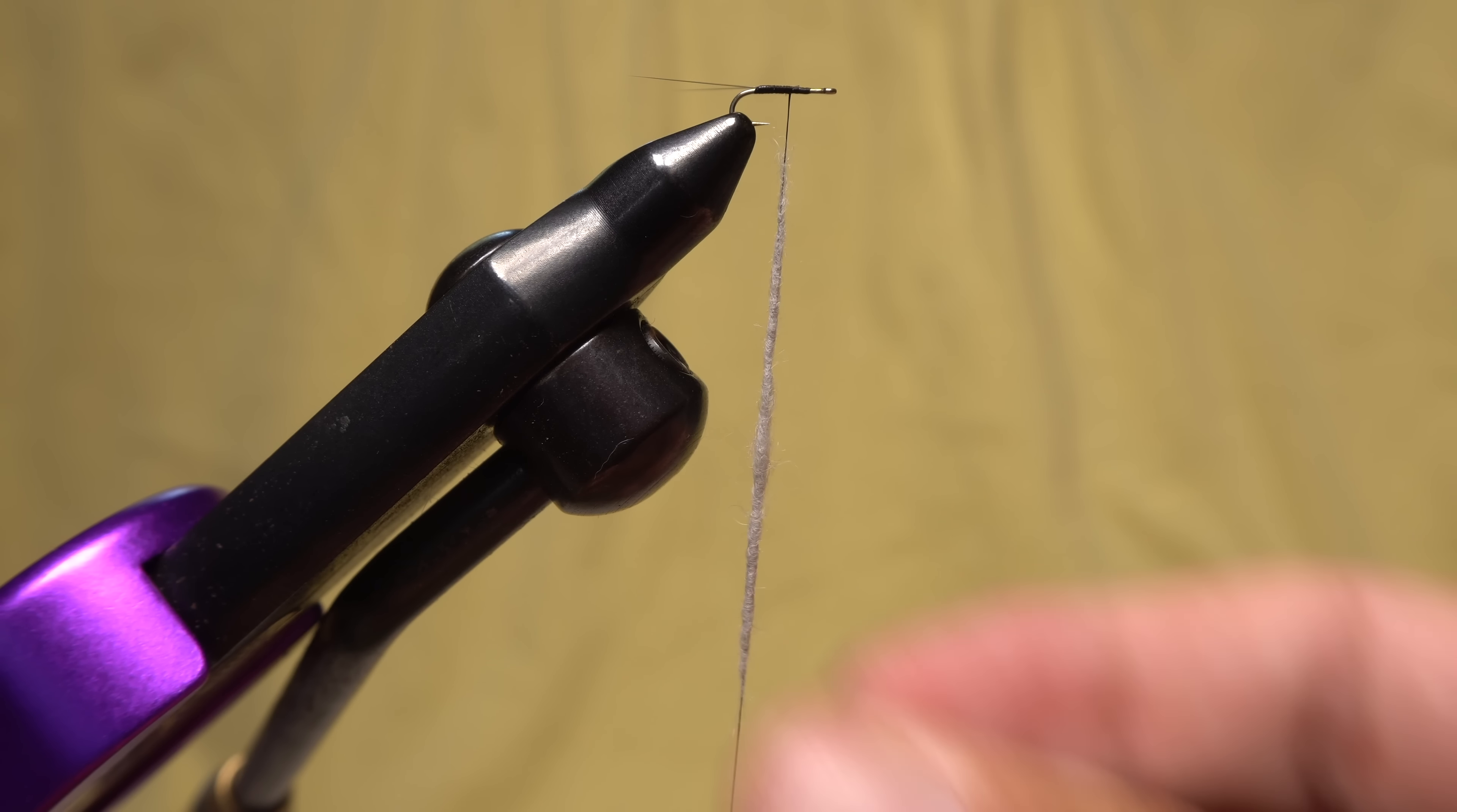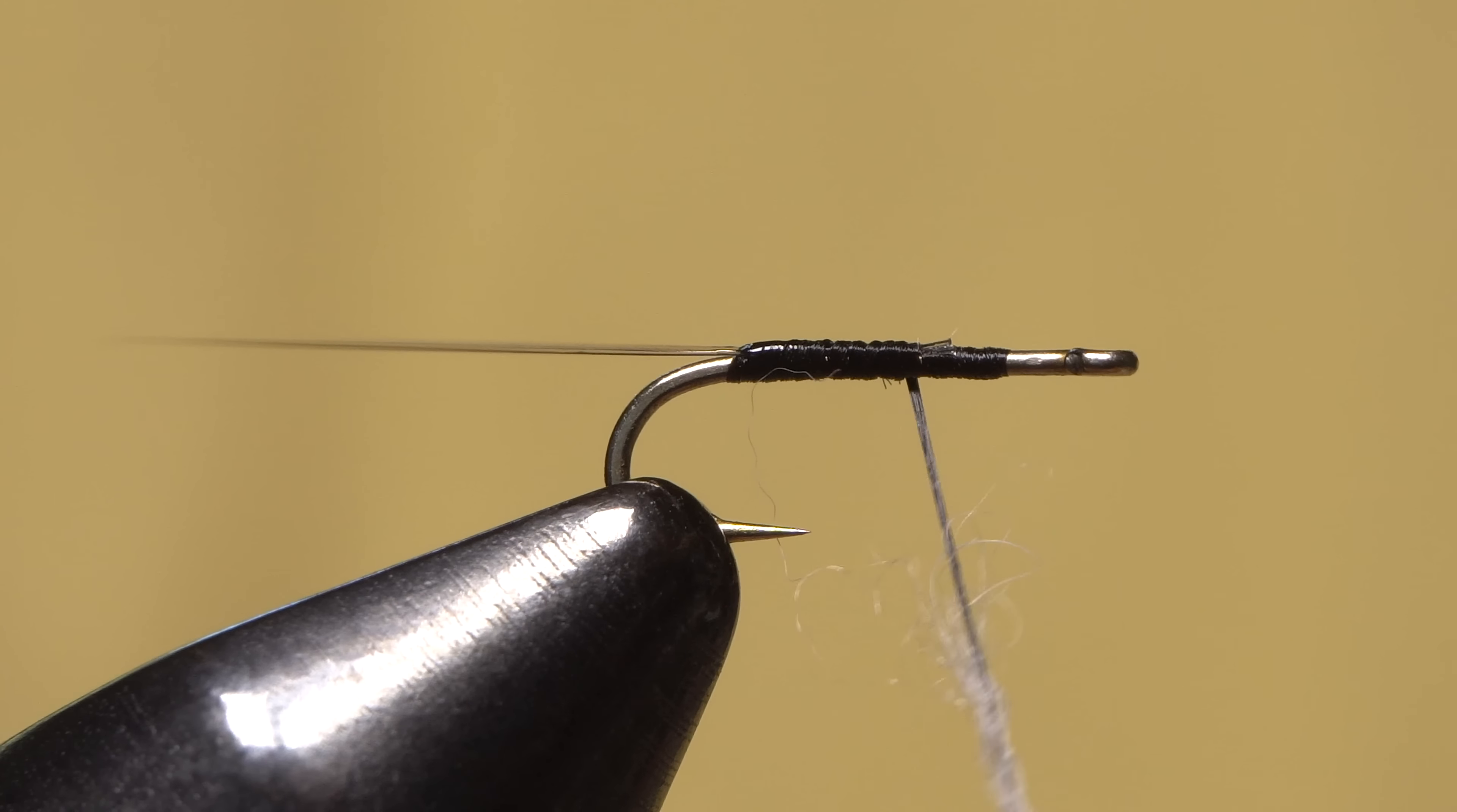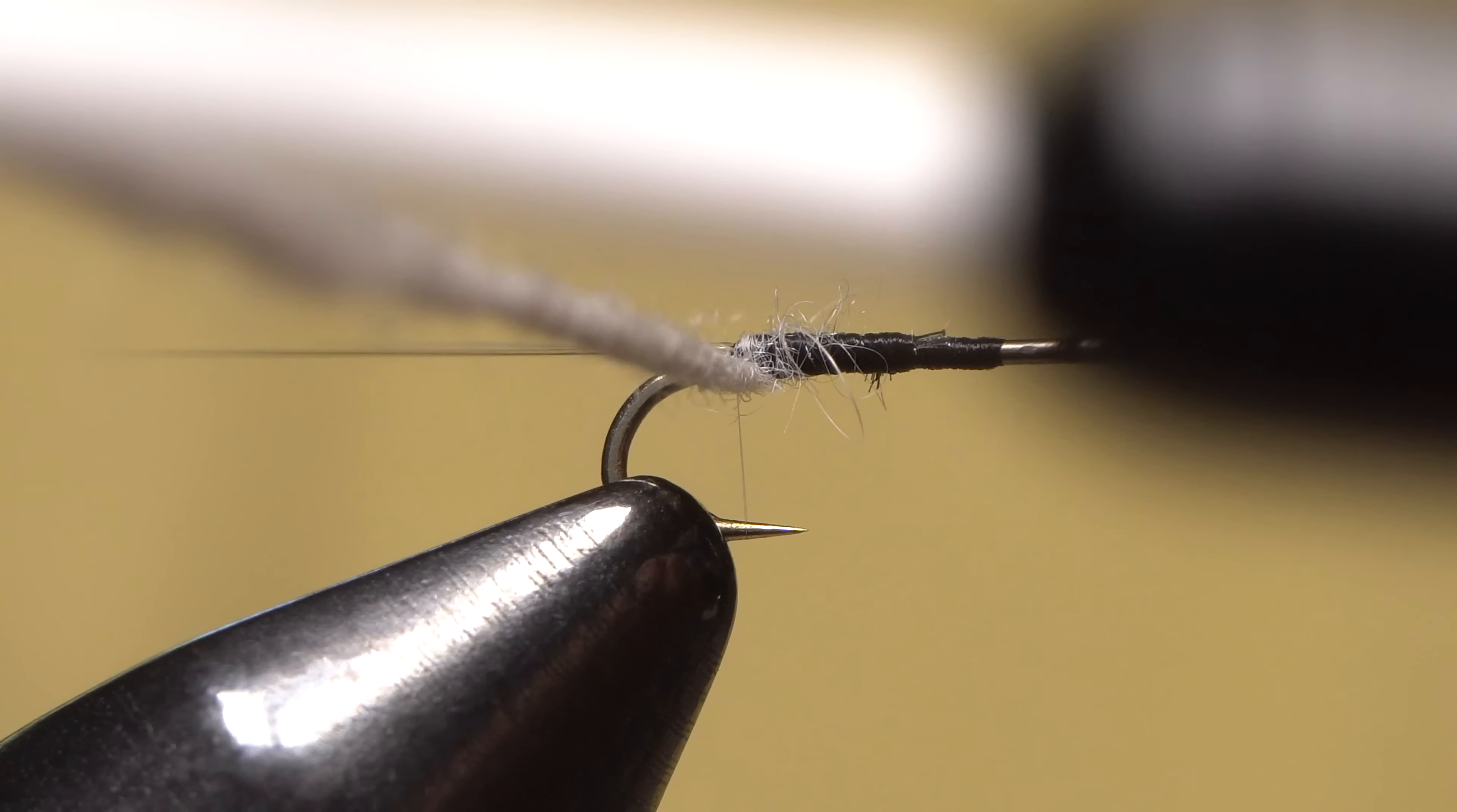With the fibers roughly parallel to your tying thread, start building a short, thin dubbing noodle. For this size 20 hook, 2 inches is plenty long.